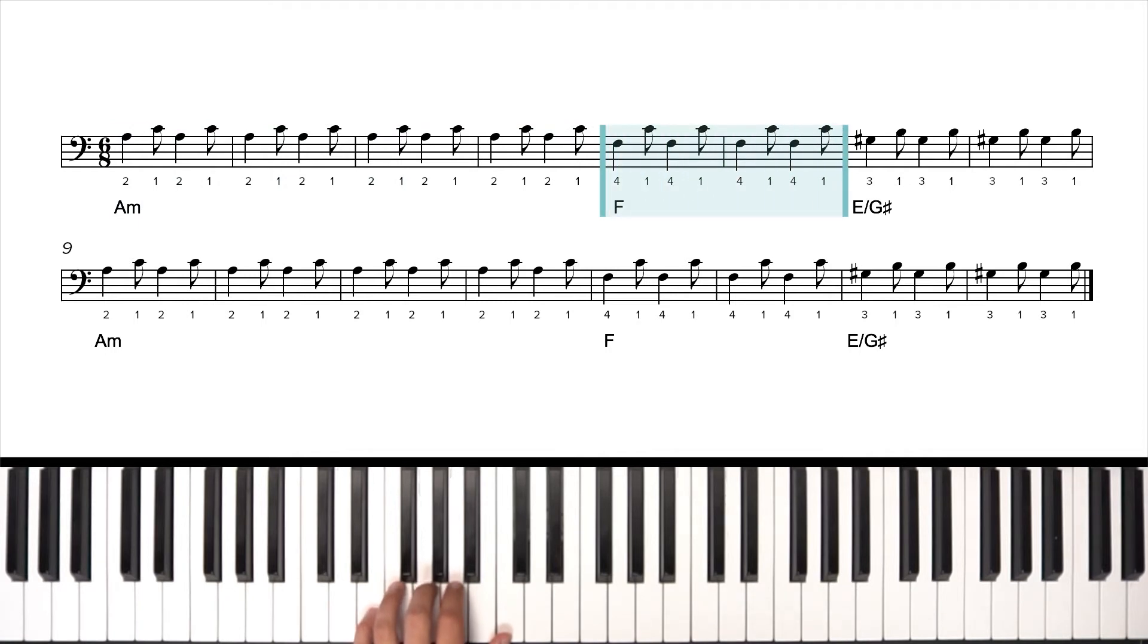Okay. When we get to measure five, our chord changes to F major. Thumb's going to stay on middle C, but we're going to play a low F instead of that A. And then on the next measure, we got E over G sharp. So our third finger is going to play G sharp. Thumb's going to play B. And that's it. The next line down is exactly the same. A minor, F, and E over G sharp.